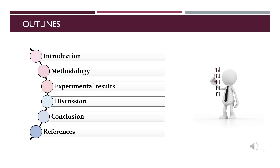The outlines of our presentation are the following. We will start with a small introduction that gives a general idea about our subject. Then we will detail the methodology used for our study. Then we will present the obtained results in the experimental section, to discuss them afterwards in the discussion section, then a conclusion in the end.